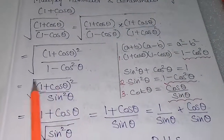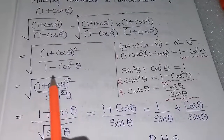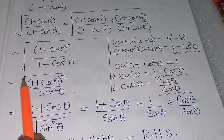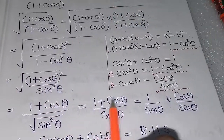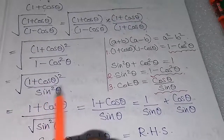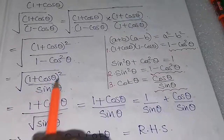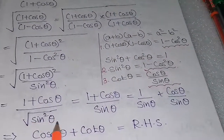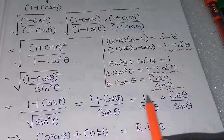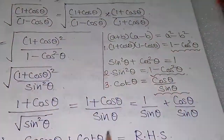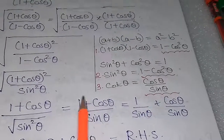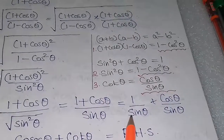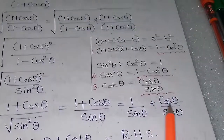The square root is applicable to both numerator and denominator. Applying the square root, the index 2 in the numerator cancels, giving (1 + cosθ). In the denominator, square root of sin²θ gives sinθ. So we have (1 + cosθ) / sinθ, which can be split as 1/sinθ plus cosθ/sinθ.